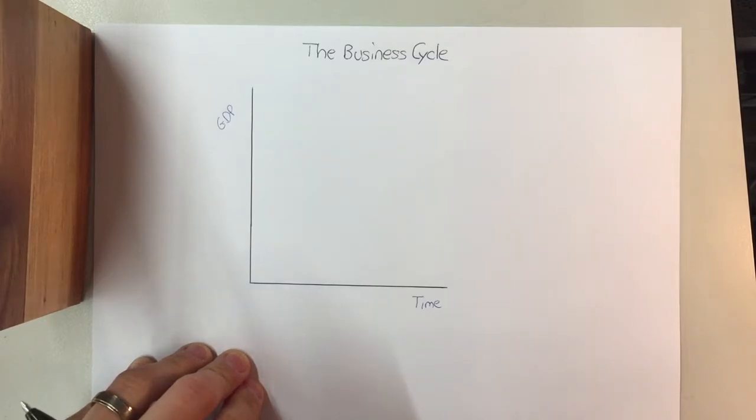And so we're looking at how, really our output, how much output do we have throughout a year, or throughout 10 years, or throughout 100 years.